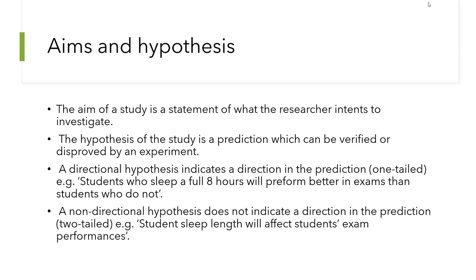The very first thing you need to understand about the way that psychologists do experiments is that at the heart of their experiments, they have an aim and a hypothesis. The aim of a study is a statement of what the researcher intends to investigate. The hypothesis is a prediction which can be verified or disproved by an experiment.